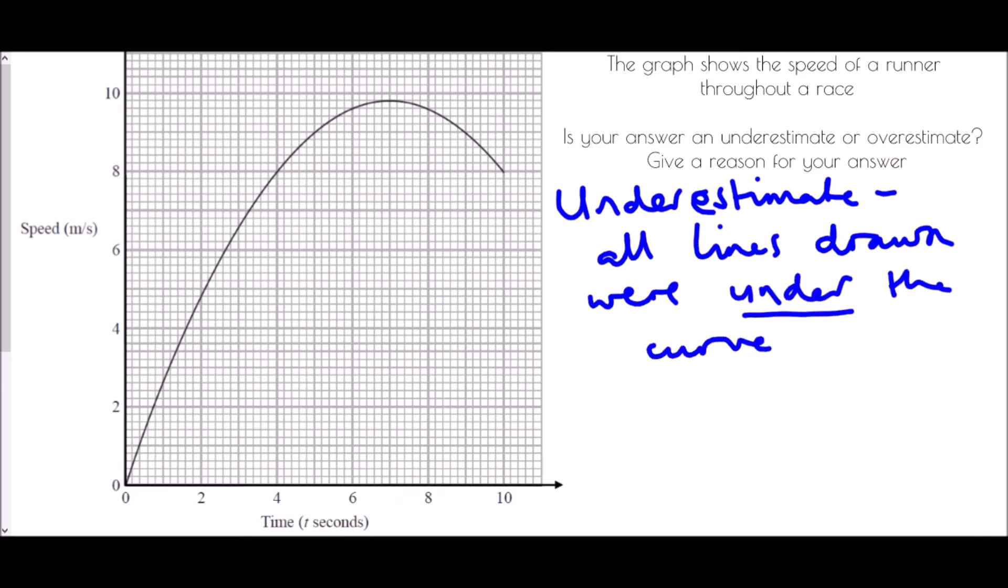Now, if they'd been above, which can happen, mainly that will happen if we have a curve like this. So when we draw them in, we might end up with straight lines which go above. Well, then we would have overestimates because we would have included space above the curve.